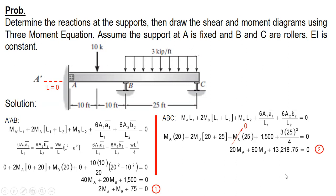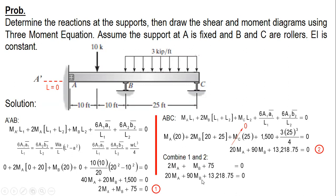Now let's combine equations 1 and 2 and solve for M-A and M-B. Use your calculator in mode 5-1 for 2 equations with 2 unknowns. After solving, you get the values of M-A and M-B.